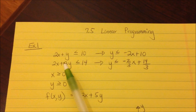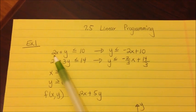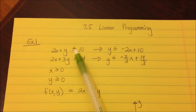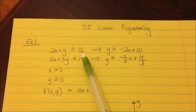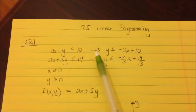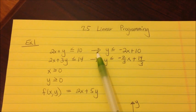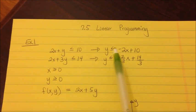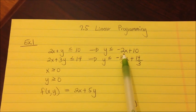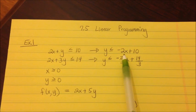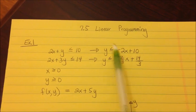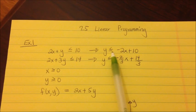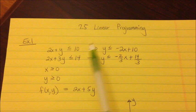Let me walk you through the first equation. We're given that 2x + y ≤ 10. We need to convert this to slope-intercept form so we can graph it. We subtract 2x from both sides and get y ≤ -2x + 10.